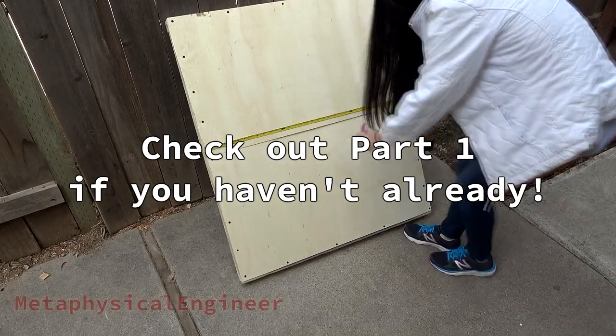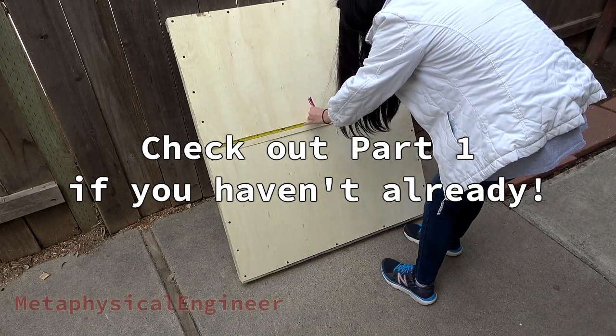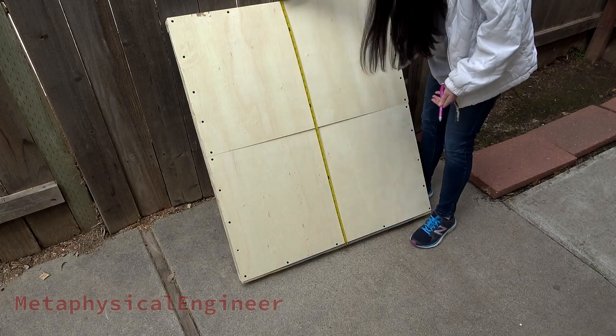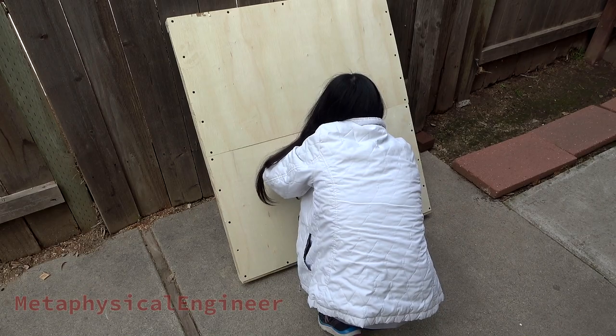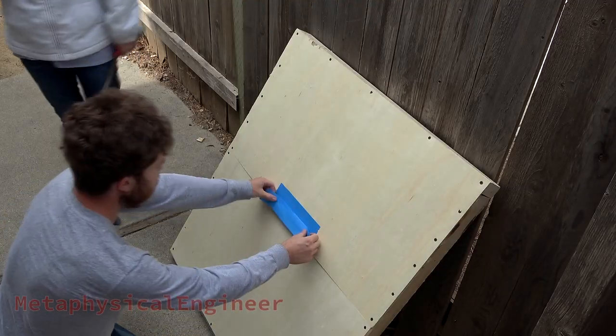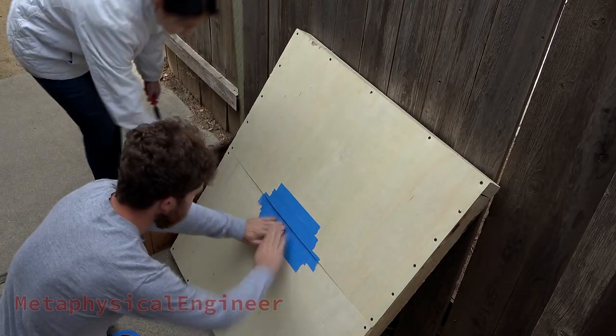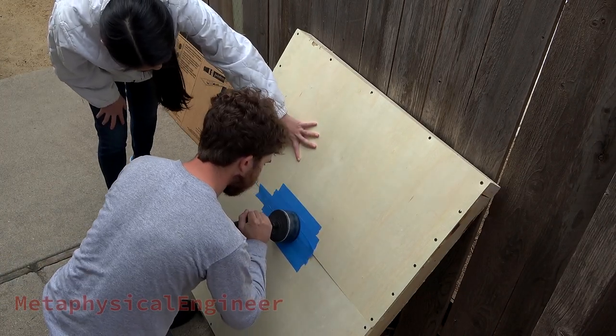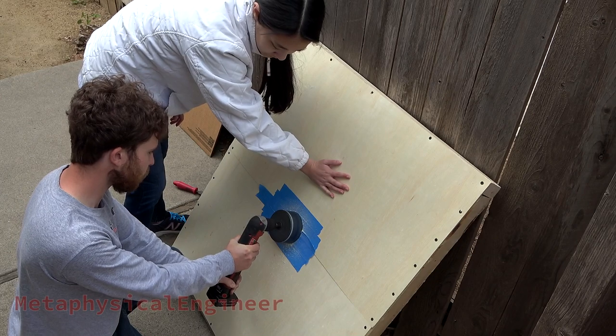We jumped right back in where we left off last time. For ventilation, we planned to mount a computer fan to the lid and left a gap in the mass-loaded vinyl to allow for airflow. We measured to put the hole dead center and painter's tape helped to keep the edges clean. We borrowed a four and a quarter inch hole saw to get through the plywood. Dull teeth and underpowered drill required patience, but it did the trick eventually.